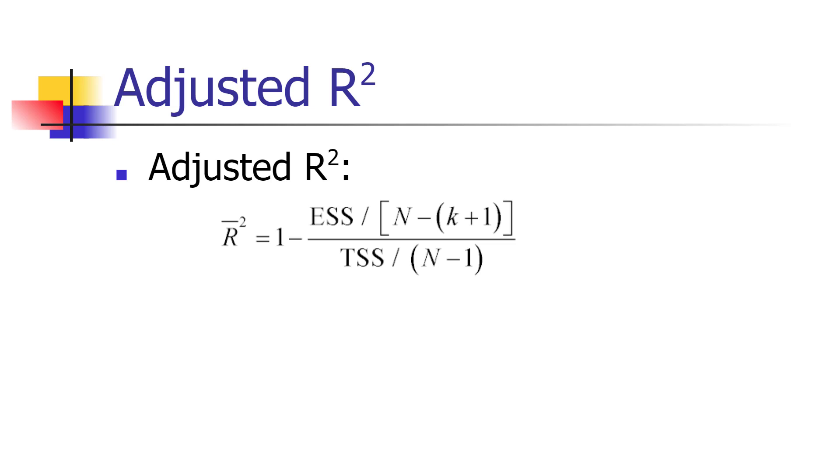And roughly speaking, what's happening is that a new variable will increase adjusted R-squared only if it adds more to the ability to explain the dependent variable than would be accounted for by the reduction in degrees of freedom that occurs when you add more variables.